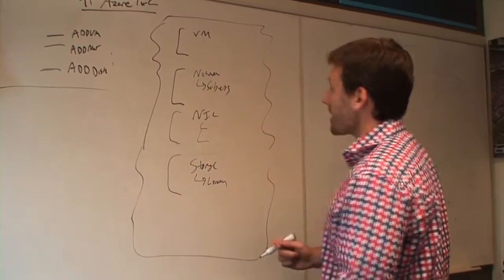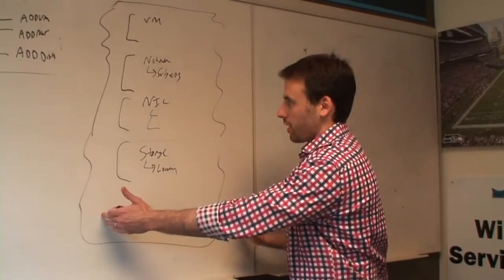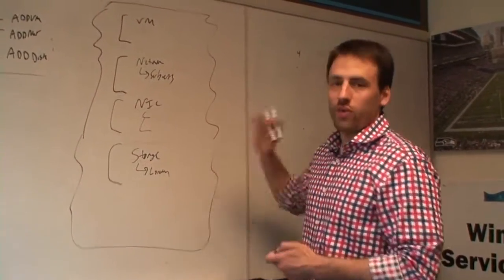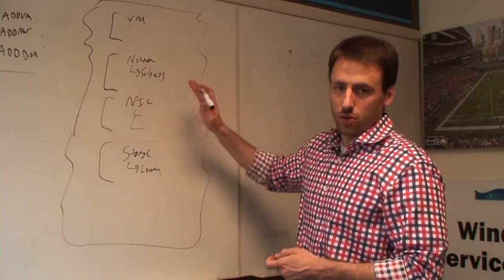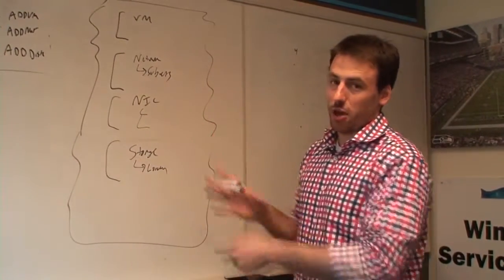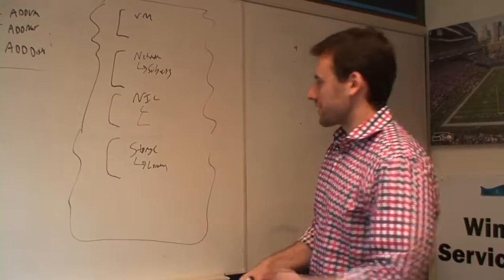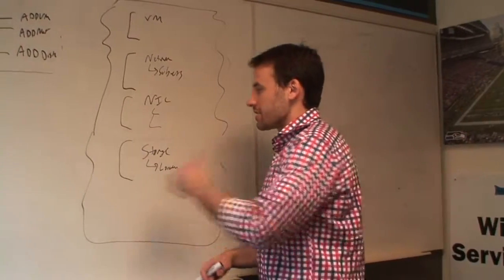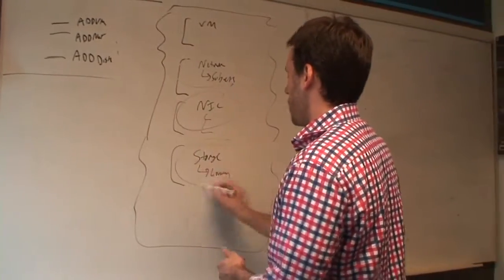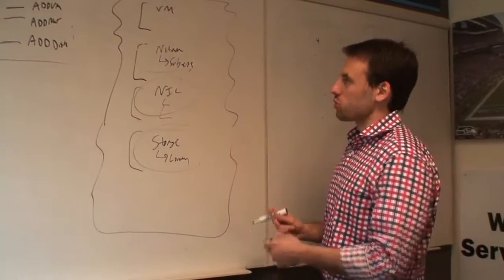All of these end up being created as part of a template language that will define each one of these — specifying location, subnets, and so on. The nice thing about this is: one, it's fully declarative, so you can check this into your code and know that every time you deploy it, the exact same thing is going to come out. You can deploy it one, two, three, seven times — same structure, same network, same NIC. Everything connects together and just works.